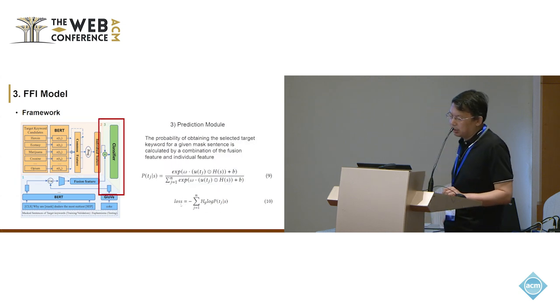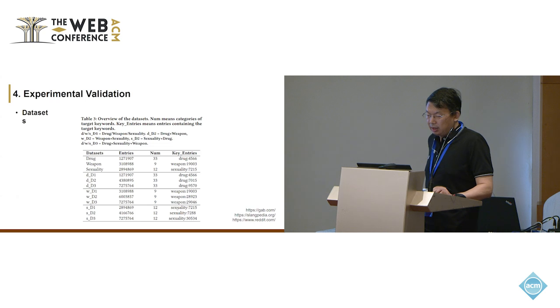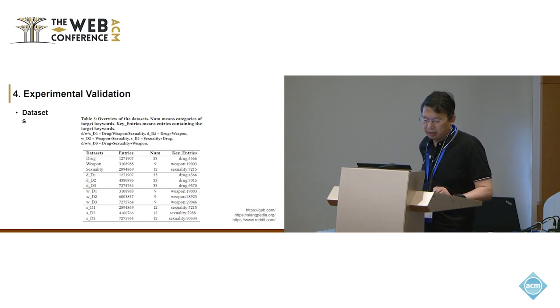The third is the prediction model. We construct our classifier to use the fusion future and the individual future. The training objective is to minimize cross entropy between the predict result and the true labels of two tasks. We use the datasets drug, mainly category drug, weapon, and sex.